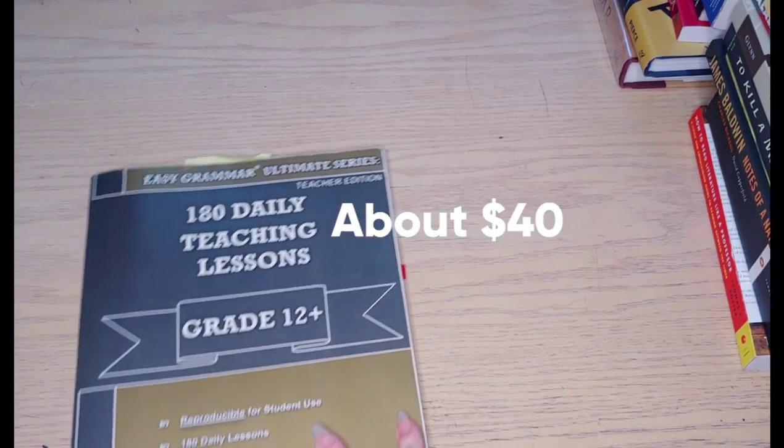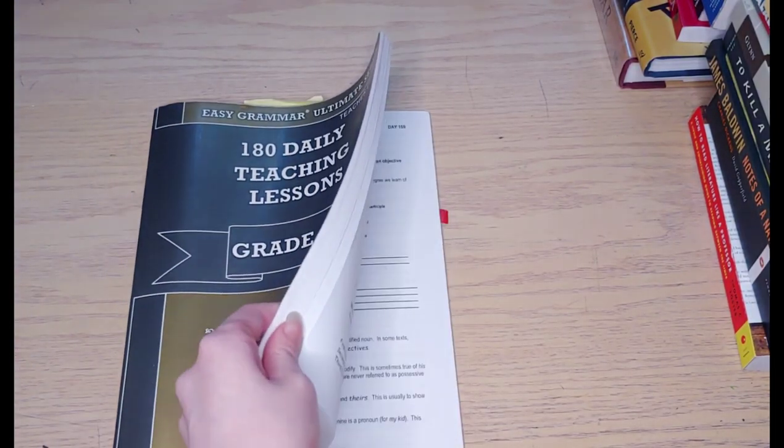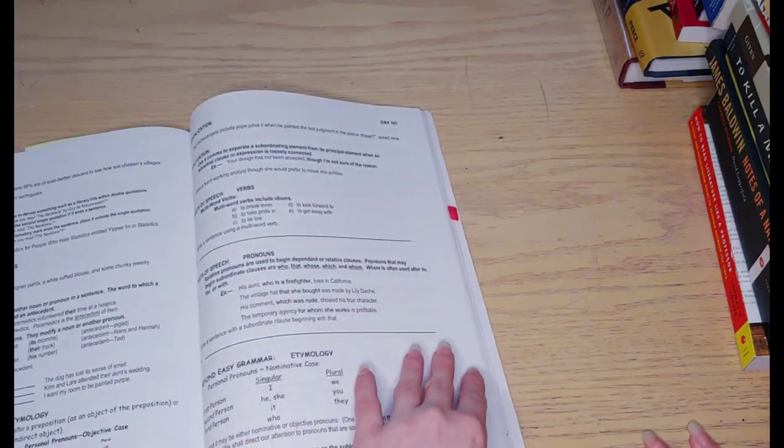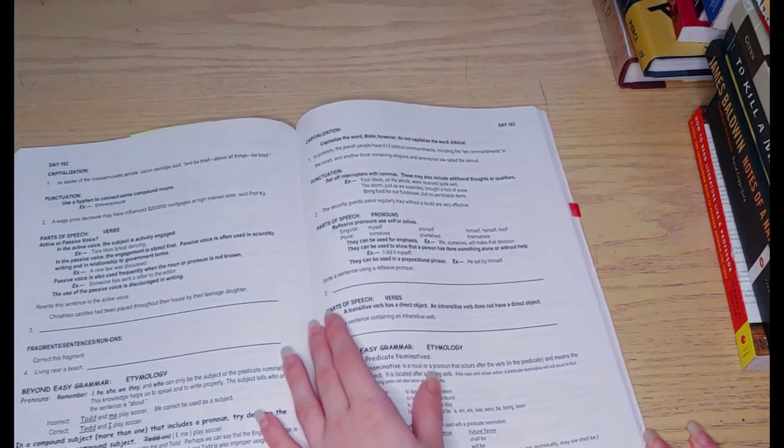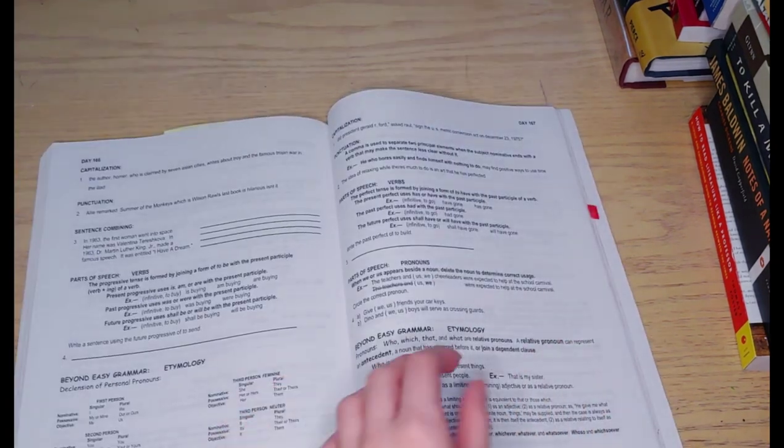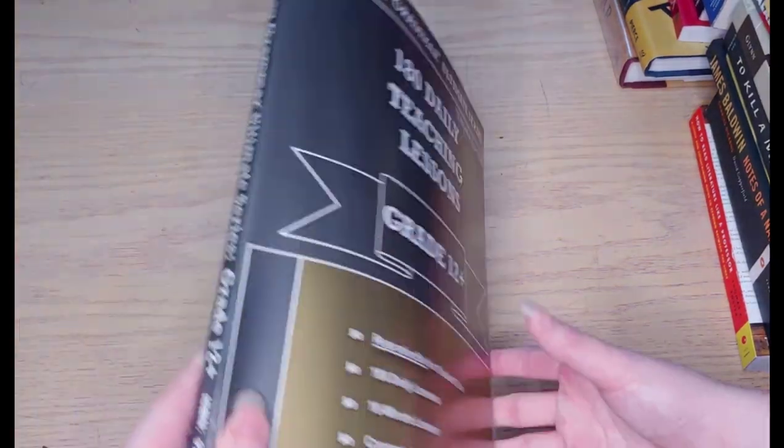I feel like an Easy Grammar book is always great to have. This is an example of a grade 12 one, but this is again pretty affordable—it's about 30 dollars. But you'll have five-minute lessons that last a whole year. It's great for grammar in your English course. Totally recommend purchasing this.